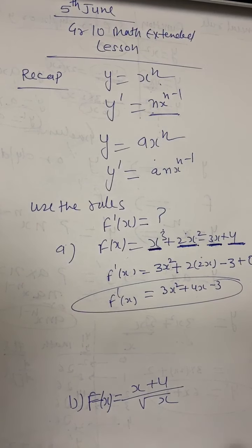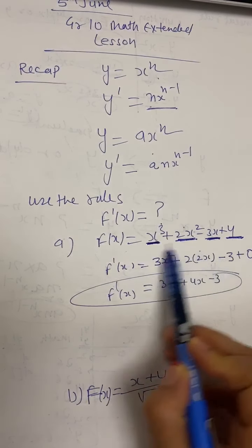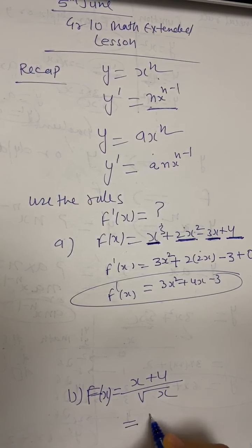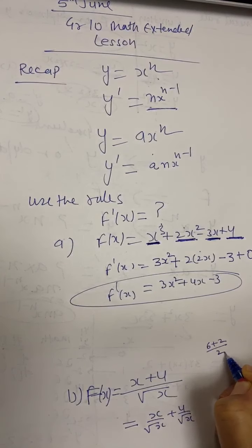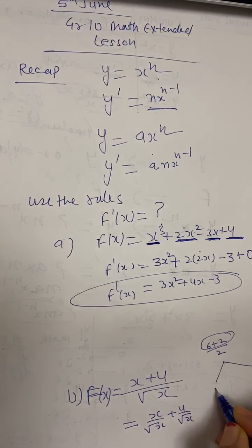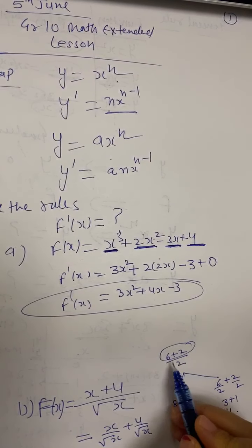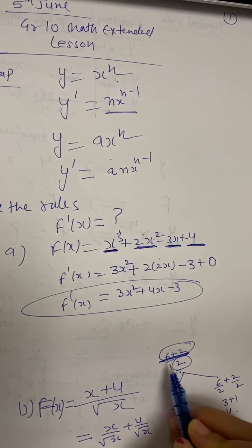The next function is (x plus 4) divided by square root of x. This doesn't look like our standard form because we have a denominator. The first step is to get rid of the denominator by separating the fraction. Just as (6 plus 2) over 2 can be written as 6 over 2 plus 2 over 2, when you have more than one term in the numerator but only one term in the denominator, you can always separate them.